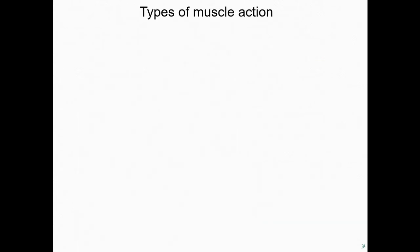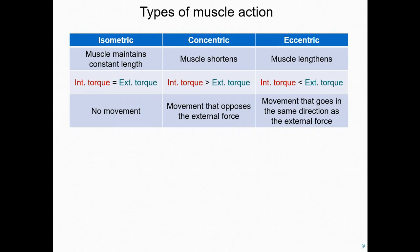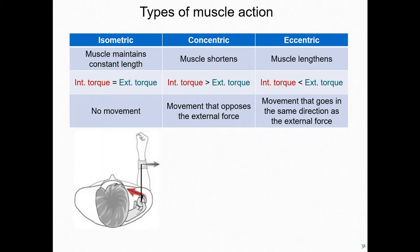There are three basic types of muscle action: isometric contraction, concentric contraction, and eccentric contraction. Isometric means same length. In an isometric contraction, the muscle remains the same length, and the internal torque produced by the muscle is exactly balanced against the external torque acting on the body. In this situation, the body does not move.